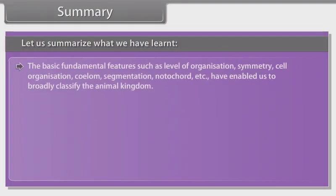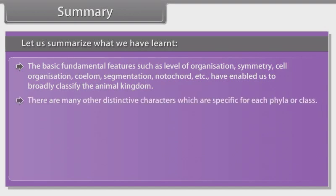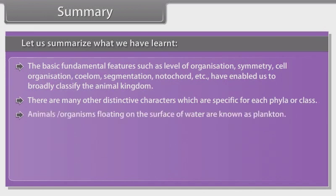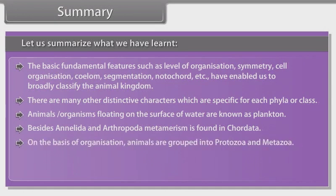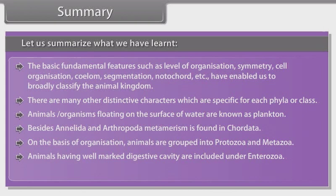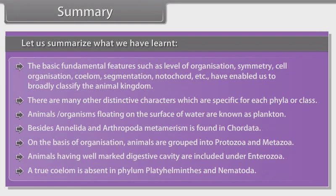Summary: The basic fundamental features such as level of organization, symmetry, cell organization, coelom, segmentation, notochord, etc. have enabled us to broadly classify the animal kingdom. There are many other distinctive characters specific for each phylum or class. Animals or organisms floating on the surface of water are known as plankton. Besides Annelida and Arthropoda, metamerism is found in Chordata. On the basis of organization, animals are grouped into Protozoa and Metazoa. Animals having a well-marked digestive cavity are included under Enterozoa. A true coelom is absent in phylum Platyhelminthes and Nematoda.